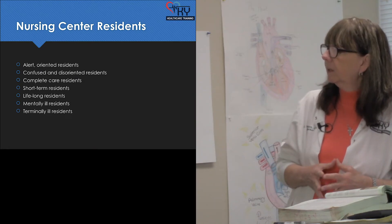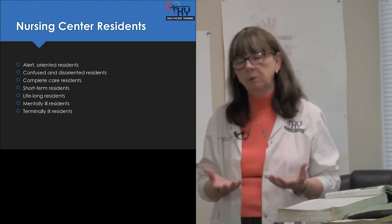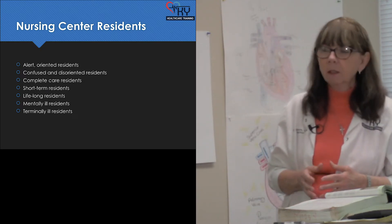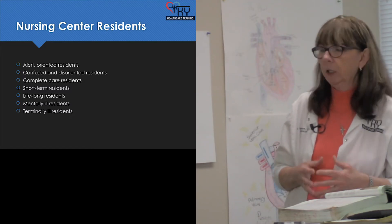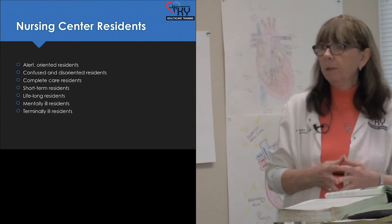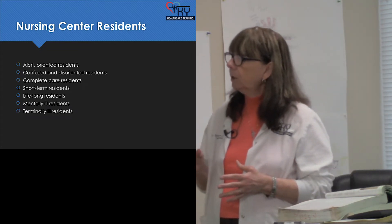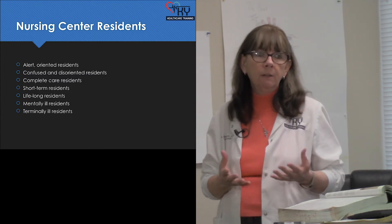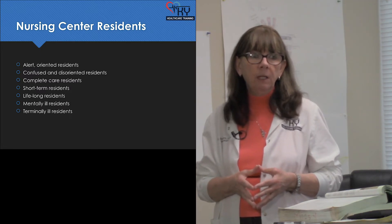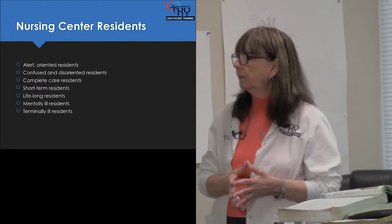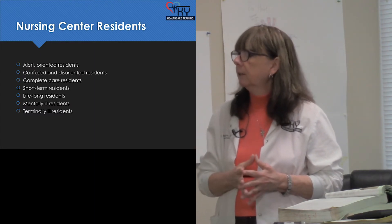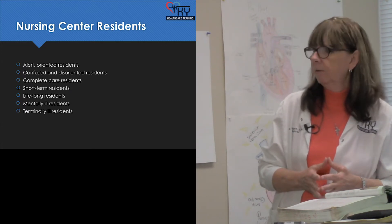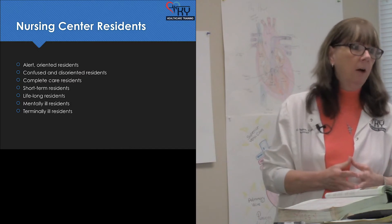Confused and disoriented residents need a lot of help — not always for physical reasons, but they don't know where they are and can't respond appropriately. Complete care residents might be in a coma or completely paralyzed — they need complete care. Short-term residents may just be there for therapy; once they meet their therapy goals, they get to go home. Or they might be there for respite — their family went on vacation and they come and stay until the family comes back. Lifelong residents are folks born without a chance, admitted to a facility early in life and staying in a facility all their life.